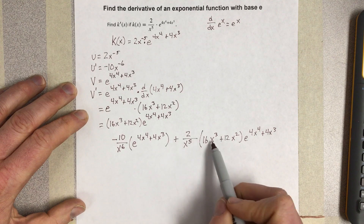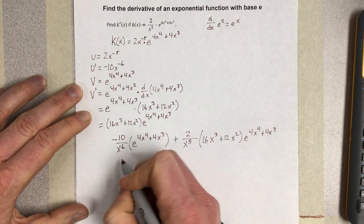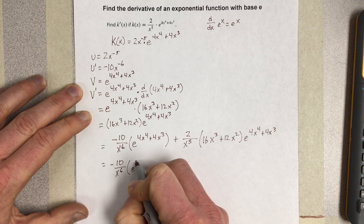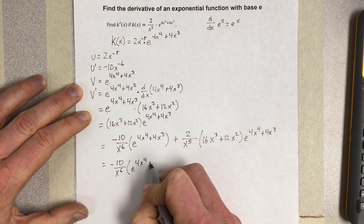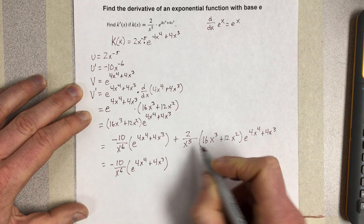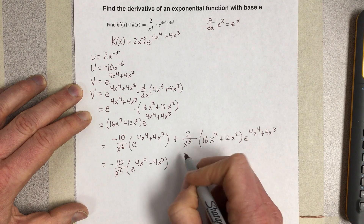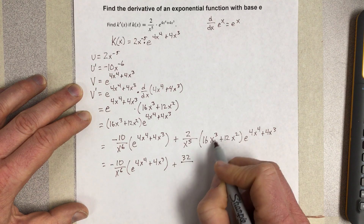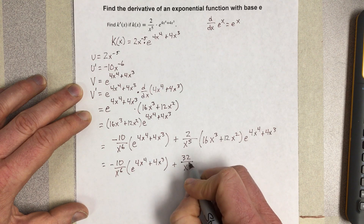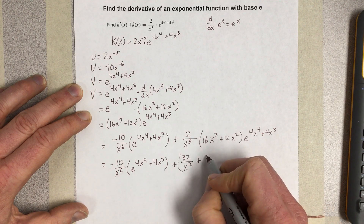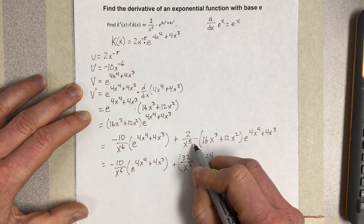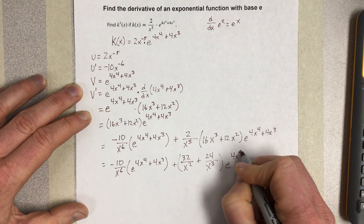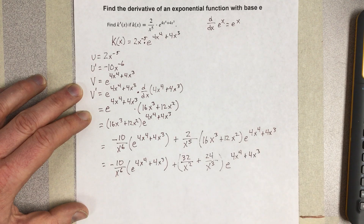I can multiply through this piece here. I would end up with negative 10 over x to the 6th times e to the 4x to the 4th plus 4x cubed. Distributing through each piece, I get plus 32 over x squared — since x cubed on top and x to the 5th on the bottom leaves x squared on the bottom — plus 24 over x cubed. All multiplied by e to the 4x to the 4th plus 4x cubed. And that would be the derivative.